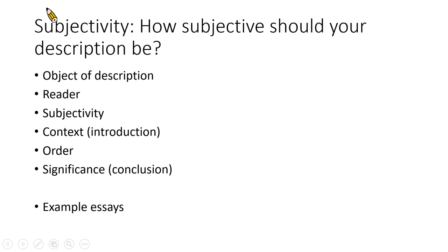You have to think about subjectivity — how subjective should your description be? This is especially important if you're describing a thing, process, or idea. For example, if you want to describe the experience of using an Apple Watch for the first time, you can think about whether you want an objective description: what the box looks like, what it looks like after you take it out, what buttons it has, what functions it has, the specific steps you have to take to begin using the Apple Watch.